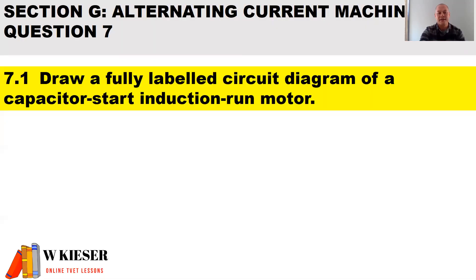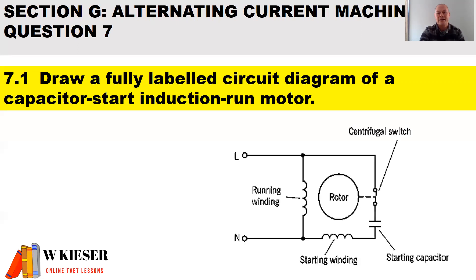In part one of question 7, draw a fully labeled circuit diagram of a capacitor start induction run motor. It's important to note that in this diagram there is only one capacitor. This is a single phase motor and it consists of a start capacitor, a start winding and a run winding, a centrifugal switch, and the rotor which is the rotating part.